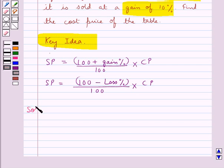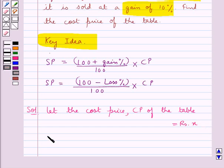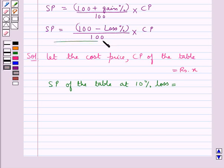Now let's proceed with the solution. First we assume, let the cost price CP of the table be equal to rupees x. Then next we find out the selling price of the table at 10% loss. We use this formula.